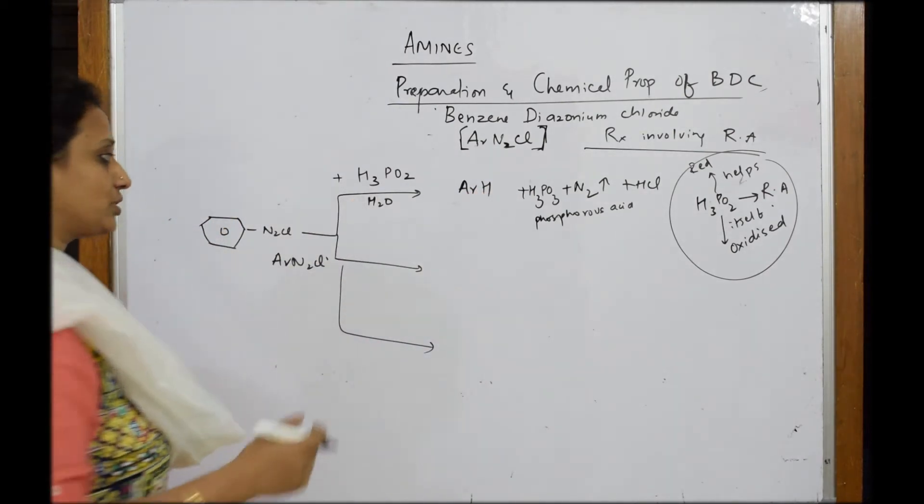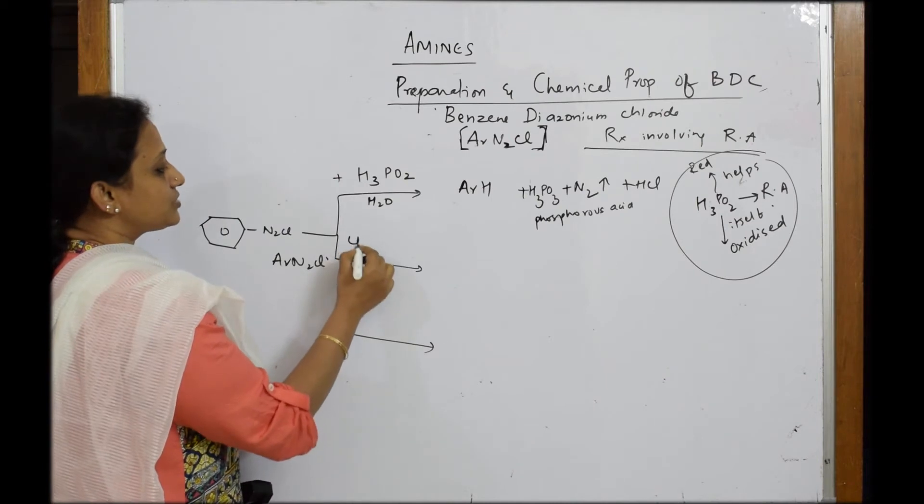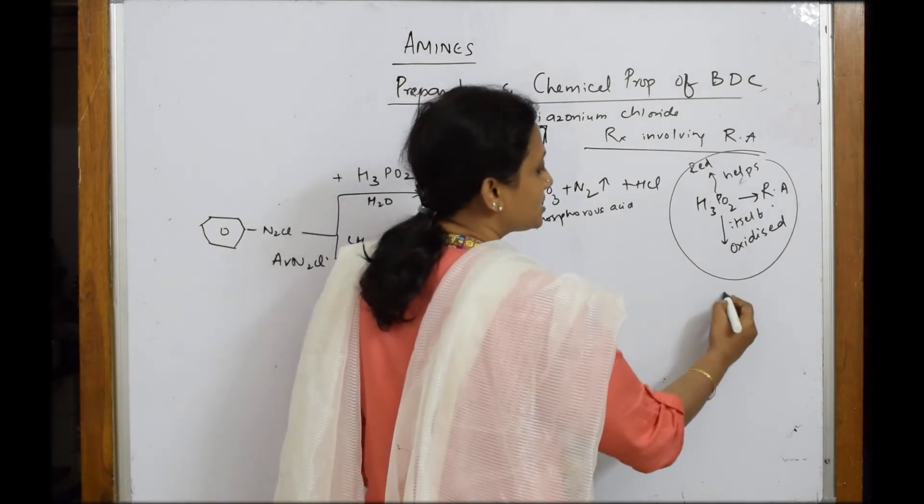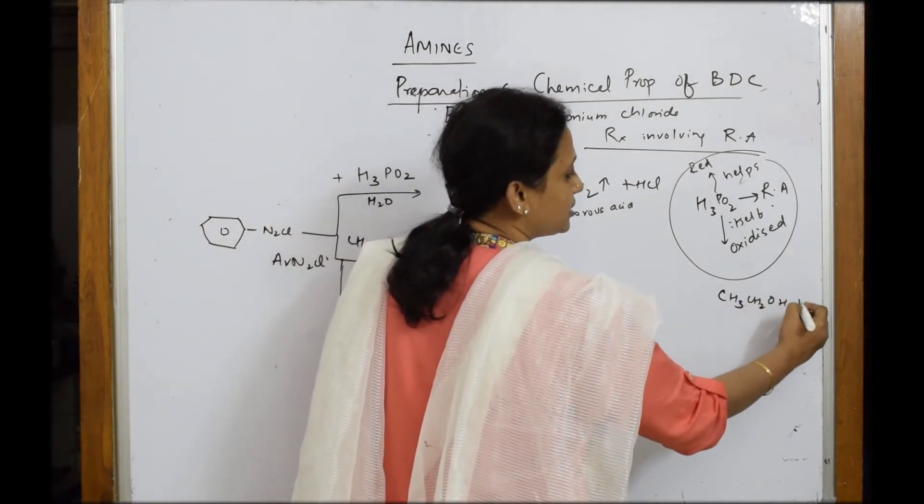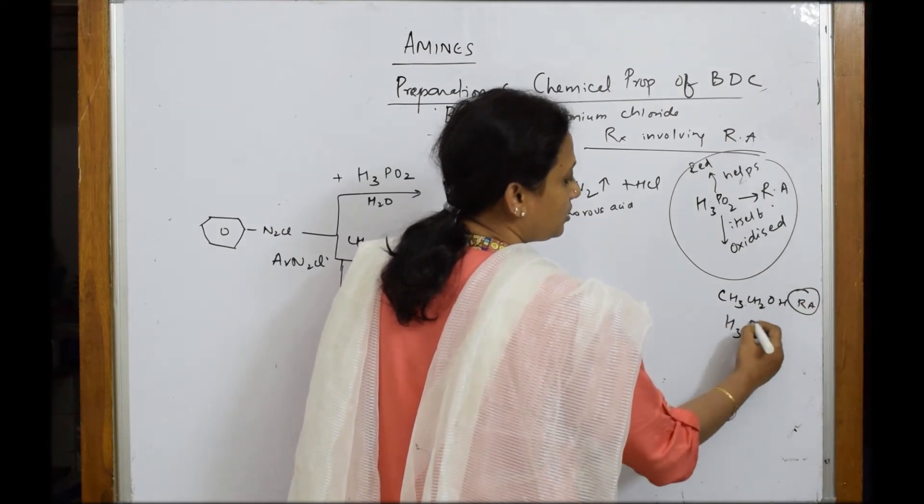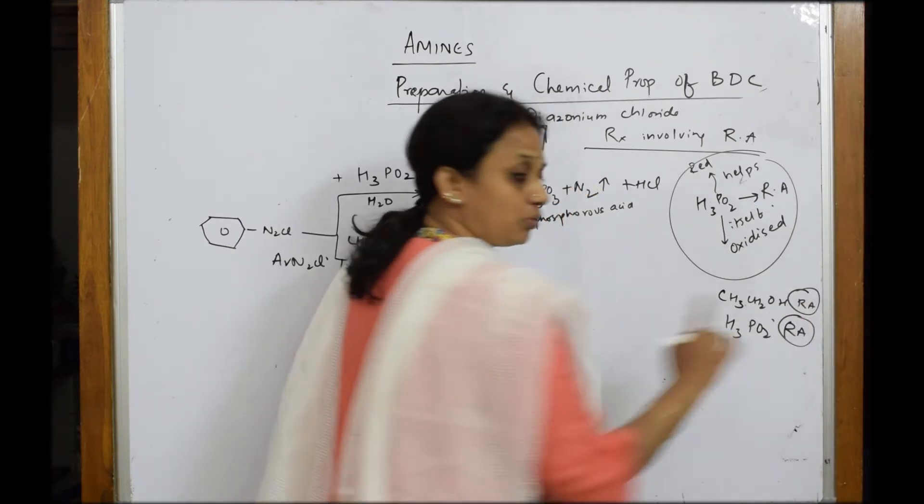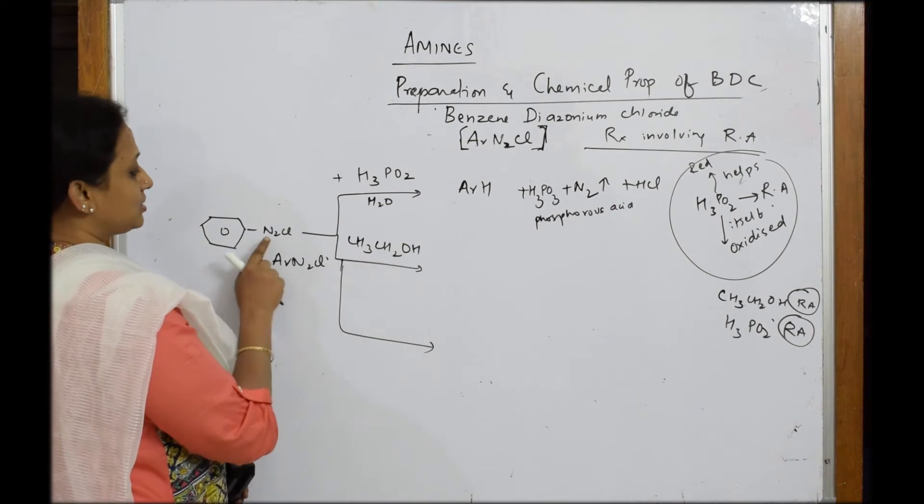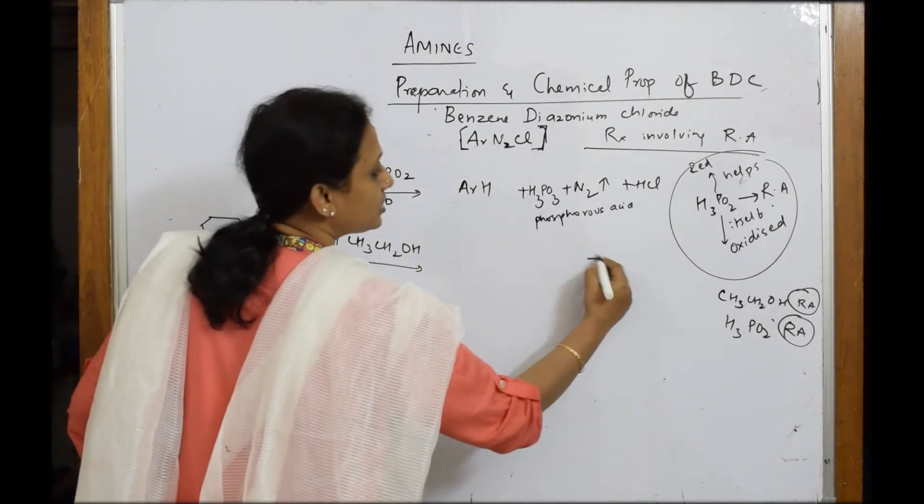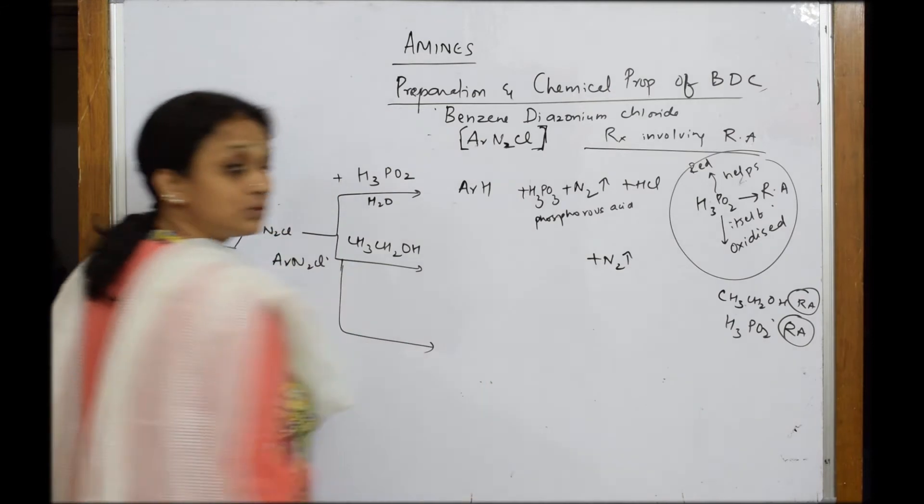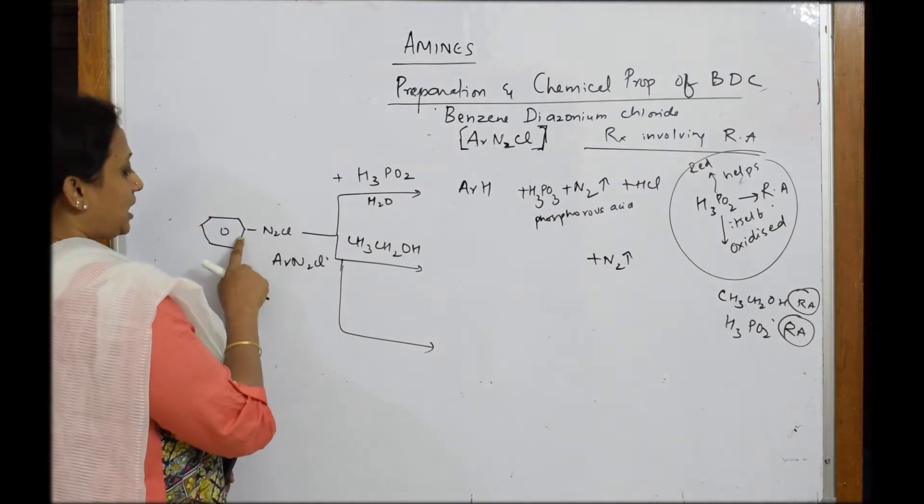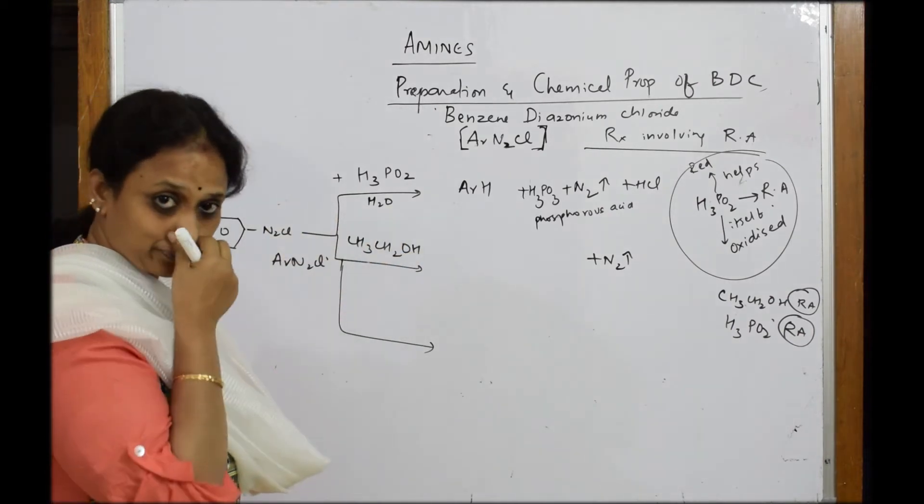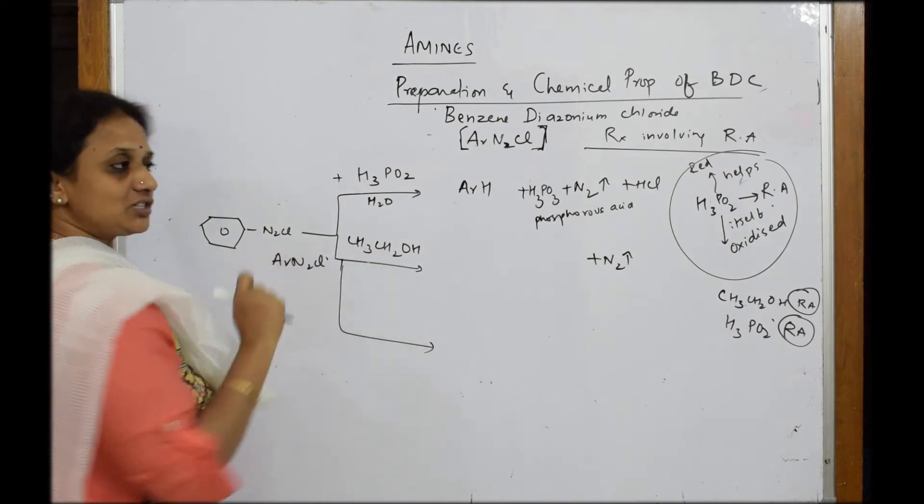So this is your role of your reducing agent. Let us take one more reducing agent. I am taking ethanol. Ethanol also as a reducing agent. So let us write CH3CH2OH is a reducing agent. H3PO2 is a reducing agent. Both will help in reduction and themselves get oxidized. So when I am taking this ethanol, same story. Whenever you're heating, first important thing nitrogen gas escapes out. After that your hydrolysis - HCl also escapes out.